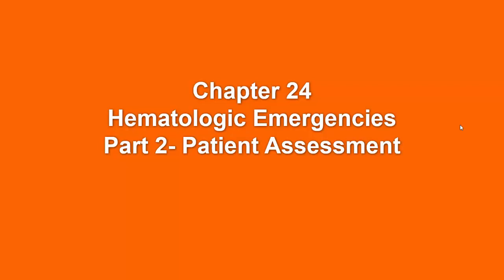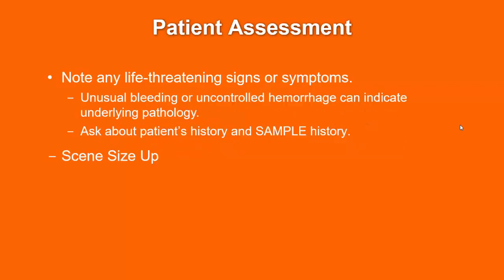However, in other situations — such as a person having a vaso-occlusive crisis in sickle cell with severe pain — you're going to have to provide more of an ALS-type treatment. We do want to make sure that we note any type of life-threatening signs or symptoms, and we also want to pay particular attention to those signs and symptoms and figure out the underlying pathology, if at all possible.